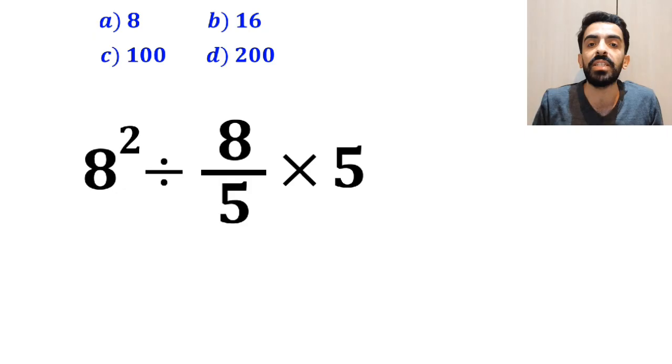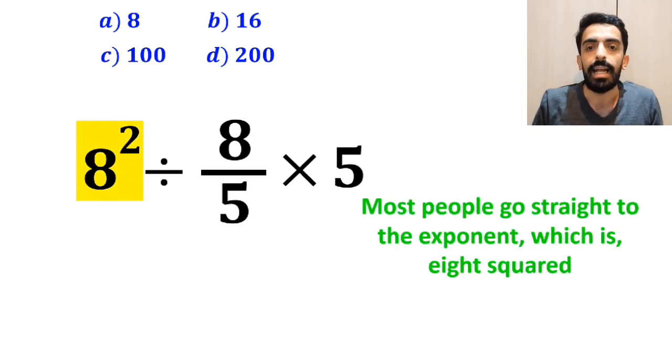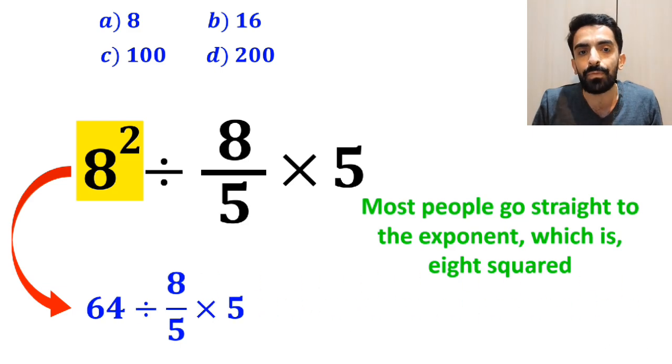In the first step to solve this question, most people go straight to the exponent, which is 8 squared, and they rewrite this expression as 64 divided by 8 over 5 multiplied by 5.